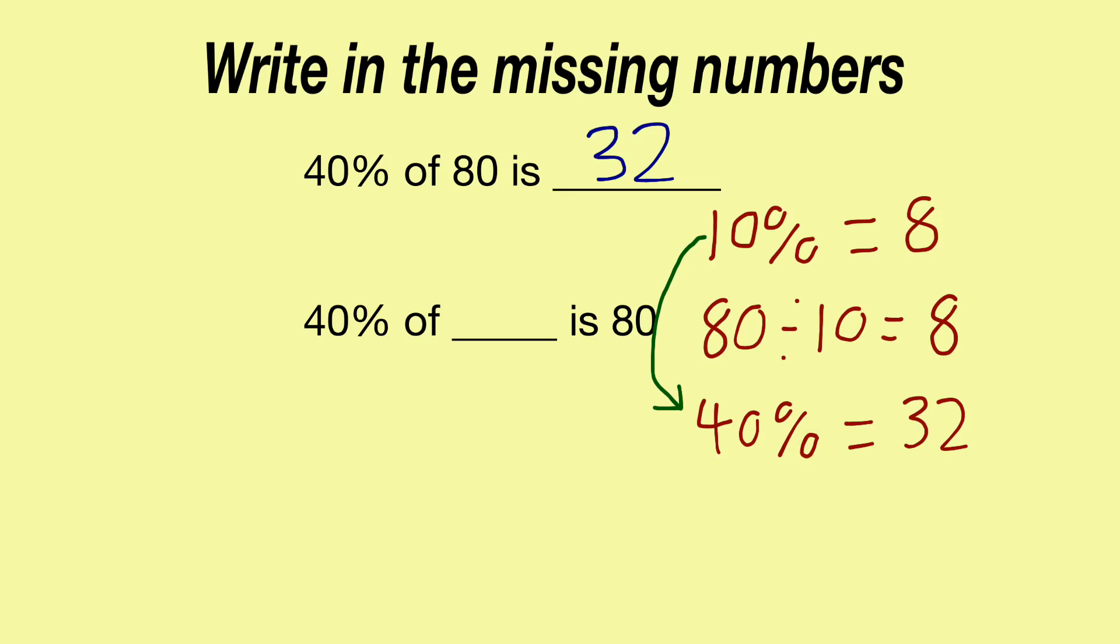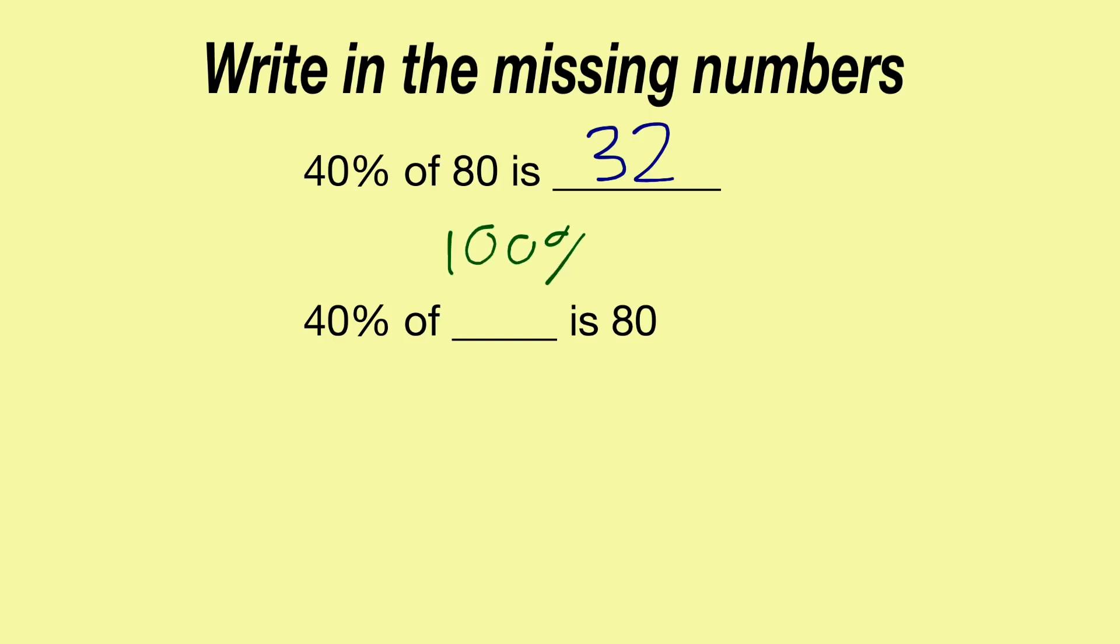OK. However, our next part of the question is a little bit different. We've got a missing number here. 40% of something is 80. This time, the question is asking us, what is this 100%? The missing amount is 100%, but we don't know what it is. So we're going to 40% equals 80.